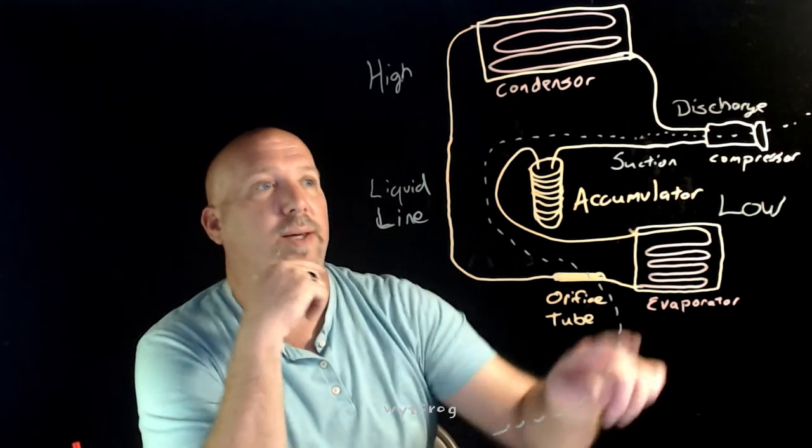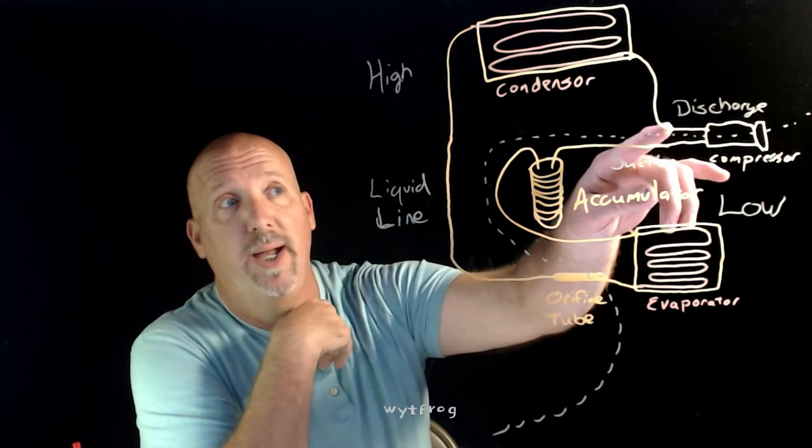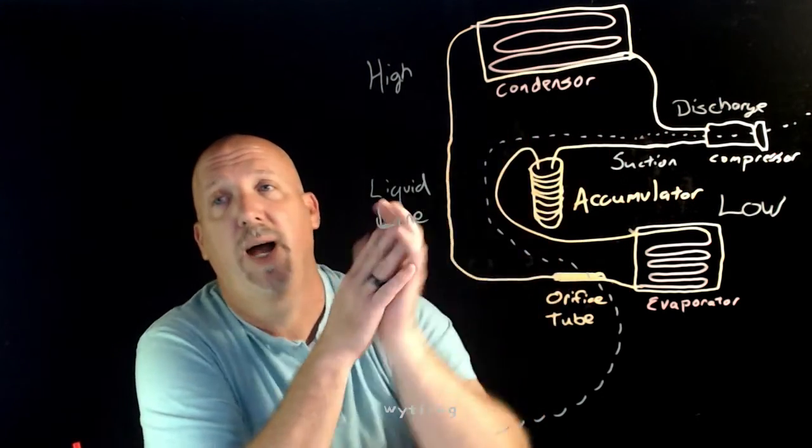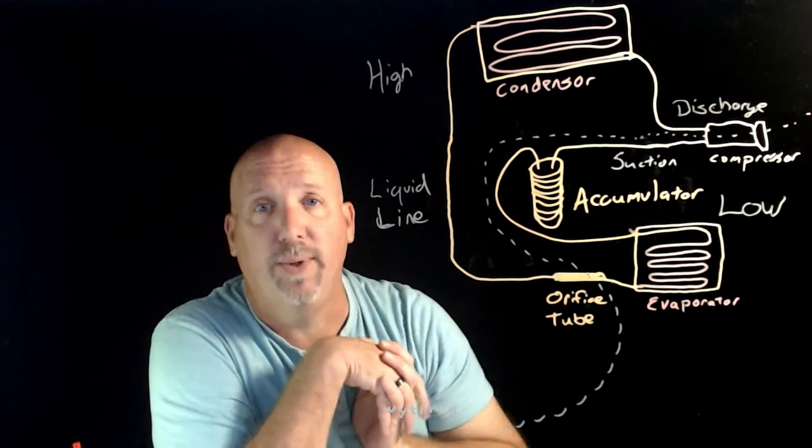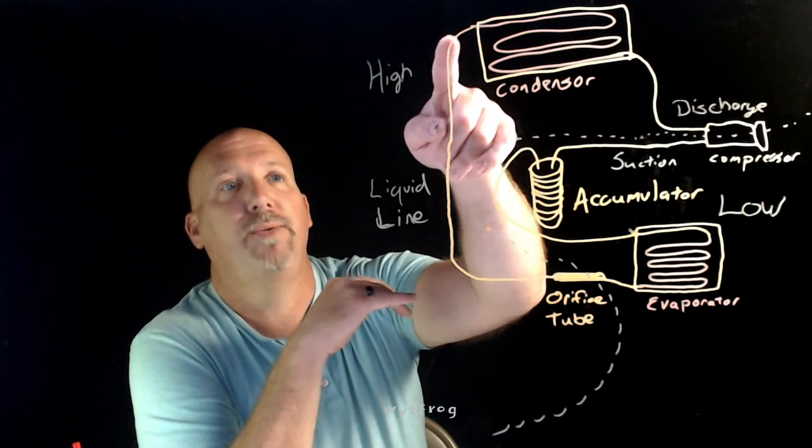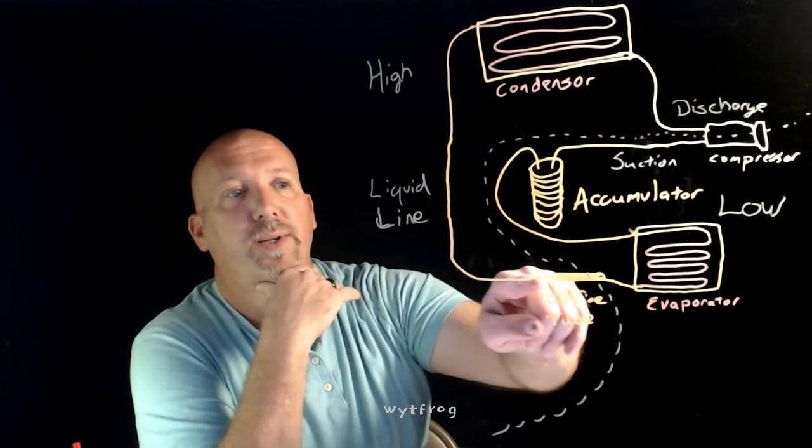Of course, your refrigerant comes out of your compressor at a high pressure vapor on the discharge side to the condenser, and the condenser condenses from a high pressure vapor to a high pressure liquid. High pressure liquid is pumped out through the liquid line, and then it goes into the orifice tube.